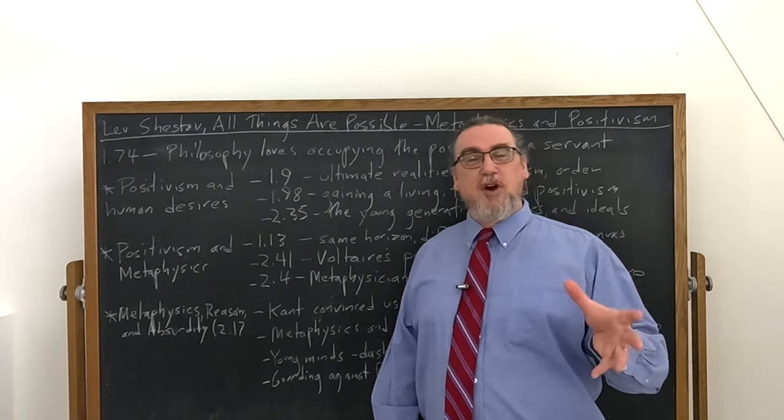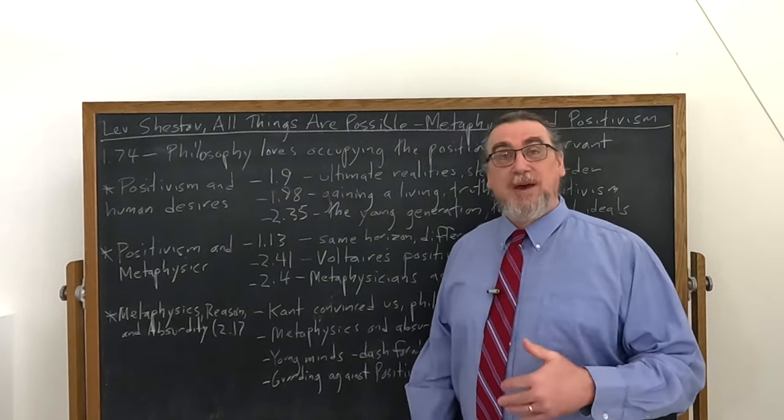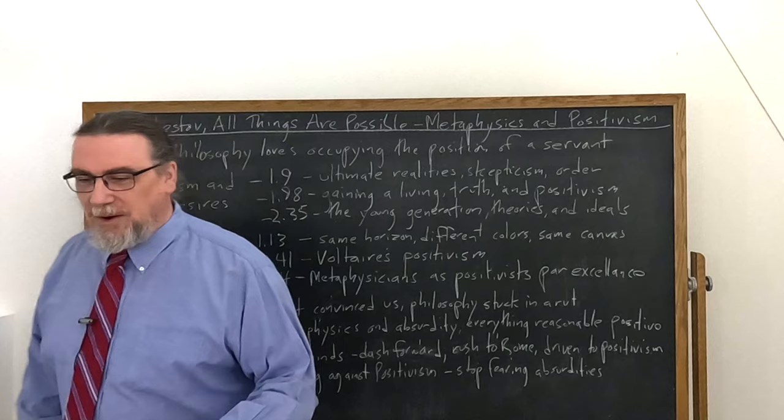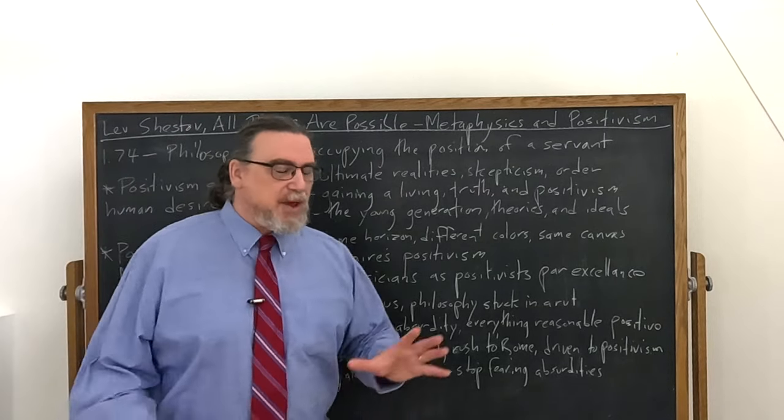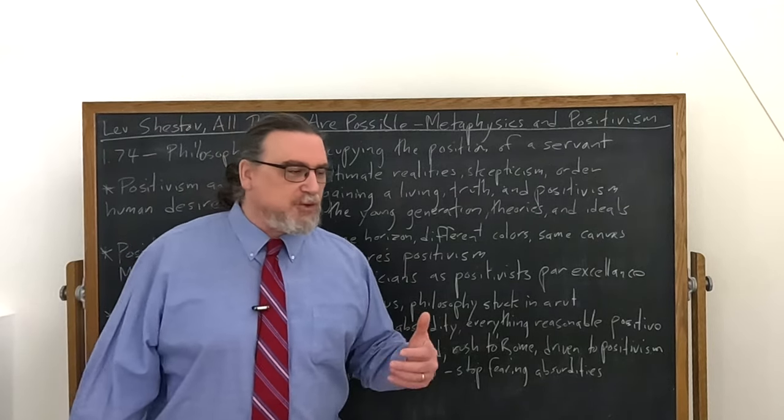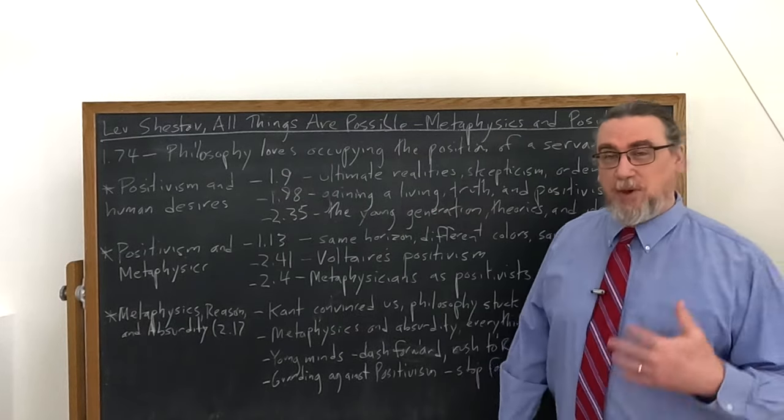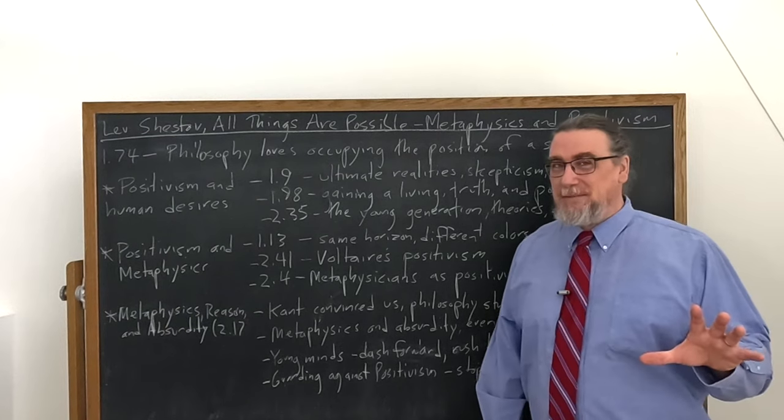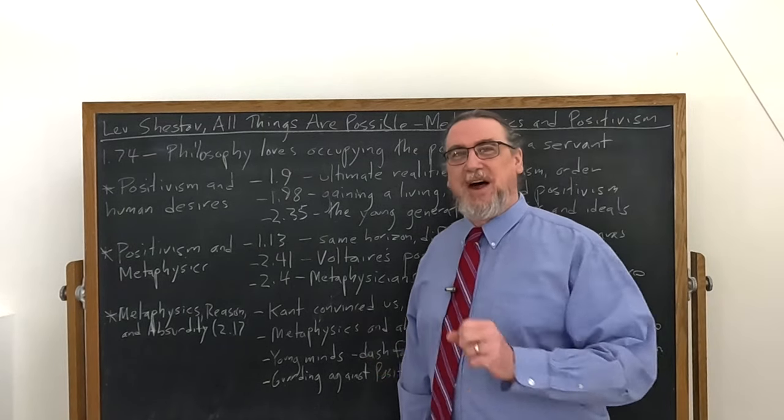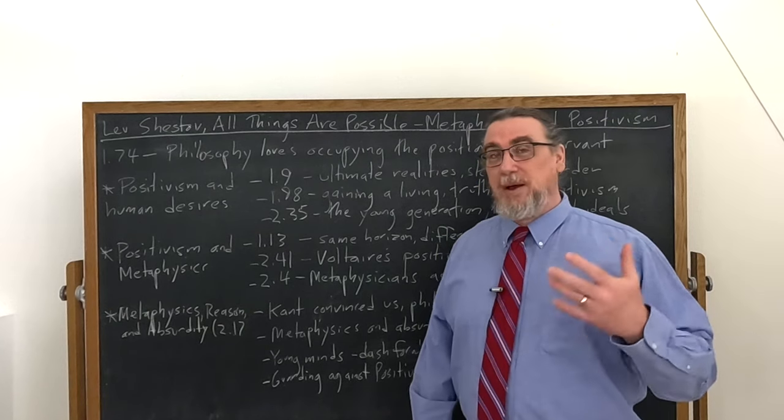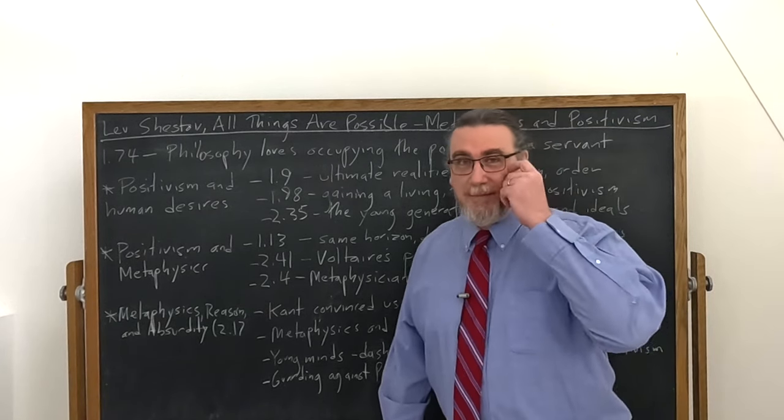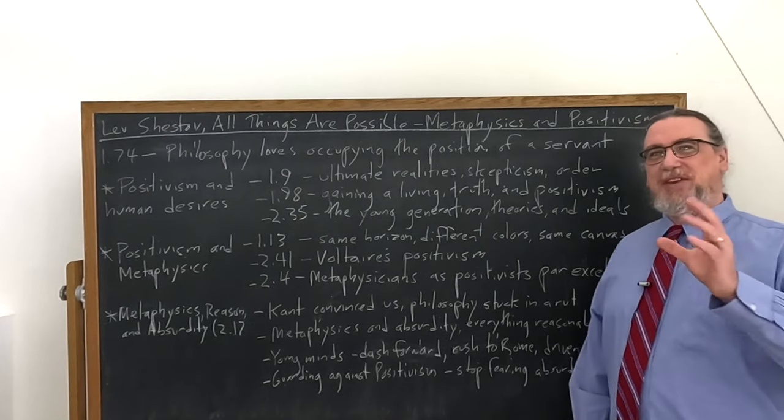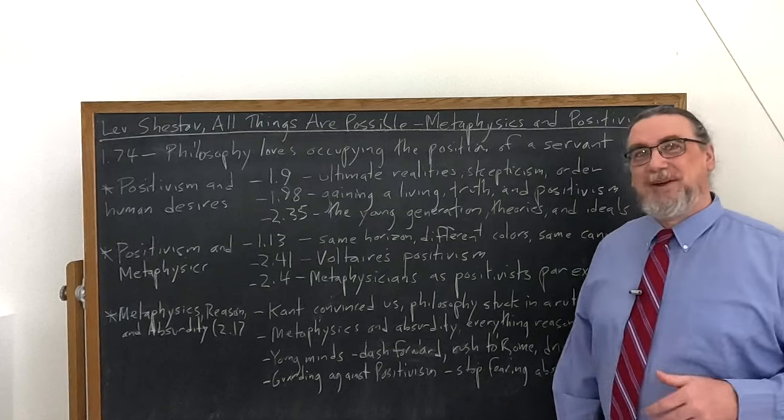Shestov is noting that we can always jump from ism to ism. We are free as human beings to decide what convictions we are going to follow. So positivism, instead of becoming the end of philosophical development, becomes one more possibility, one more stage if we want to use the positivist's own schema for understanding history.